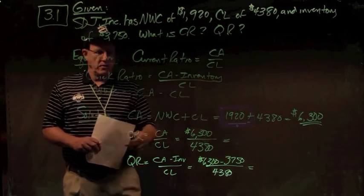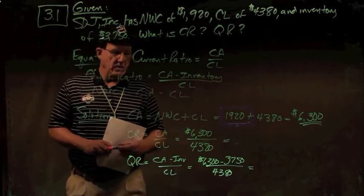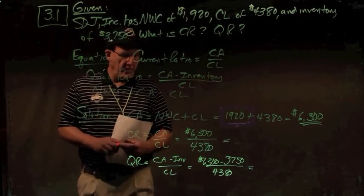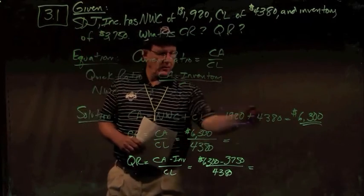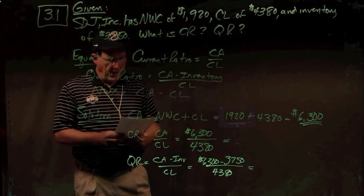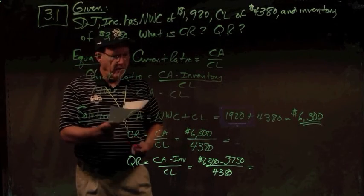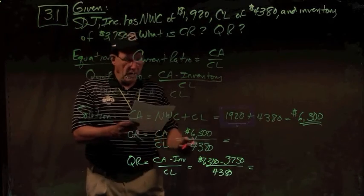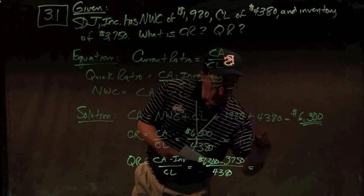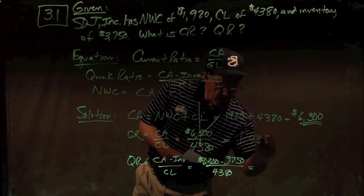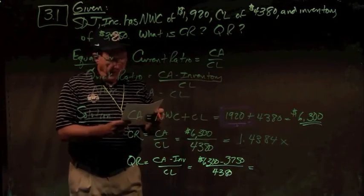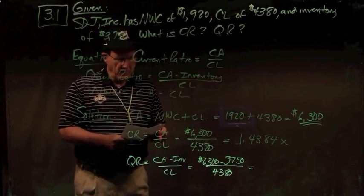Now we use that in the other two equations. Current ratio is current assets over current liabilities. We take our $6,300 of current assets divided by current liabilities of $4,380, and we get a current ratio of 1.4384 times.